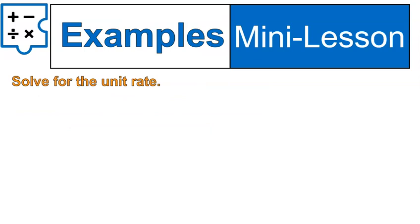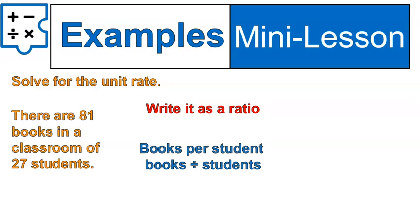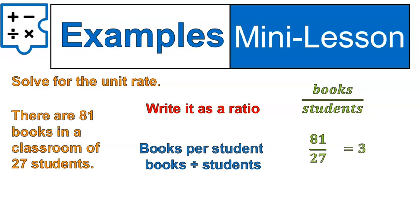I want you to solve for the unit rate. There are 81 books in a classroom of 27 students. You'll write it as a ratio — books per student — and remember that that means books divided by students. So you can write it as books over students, or 81 over 27. And 81 divided by 27 equals three. So there are three books per student. That's how you would write it as a unit rate.